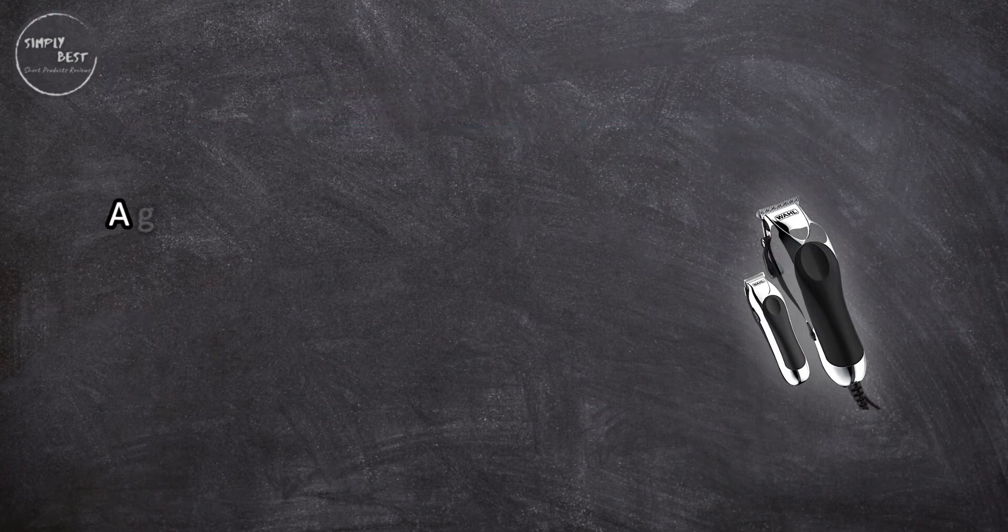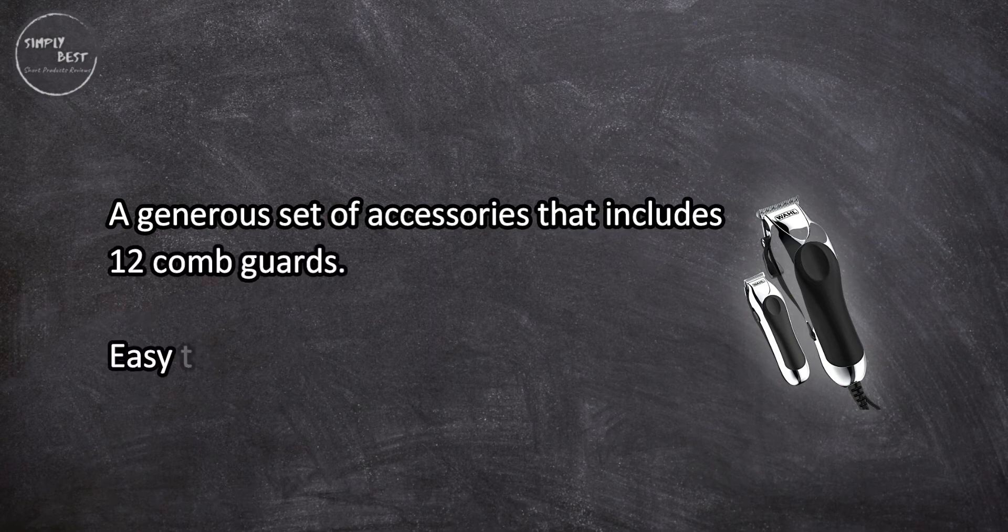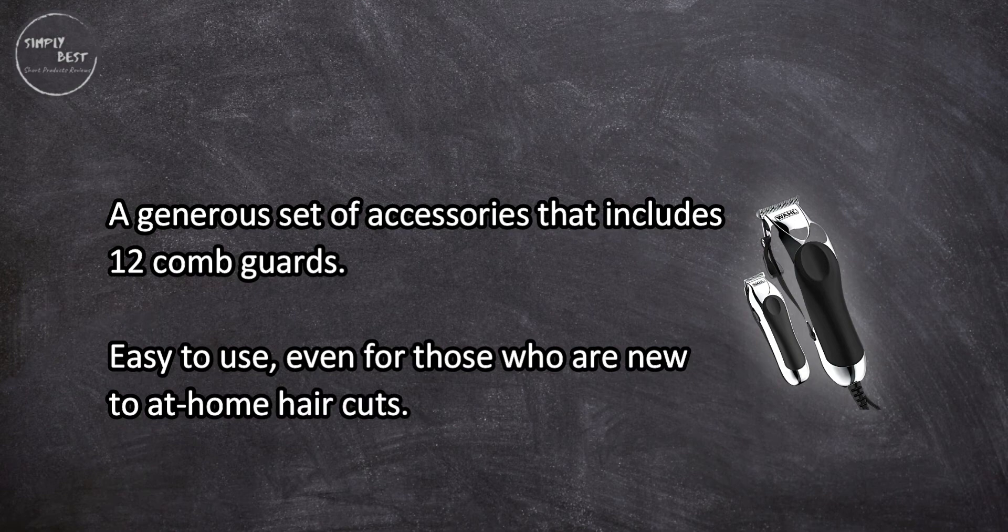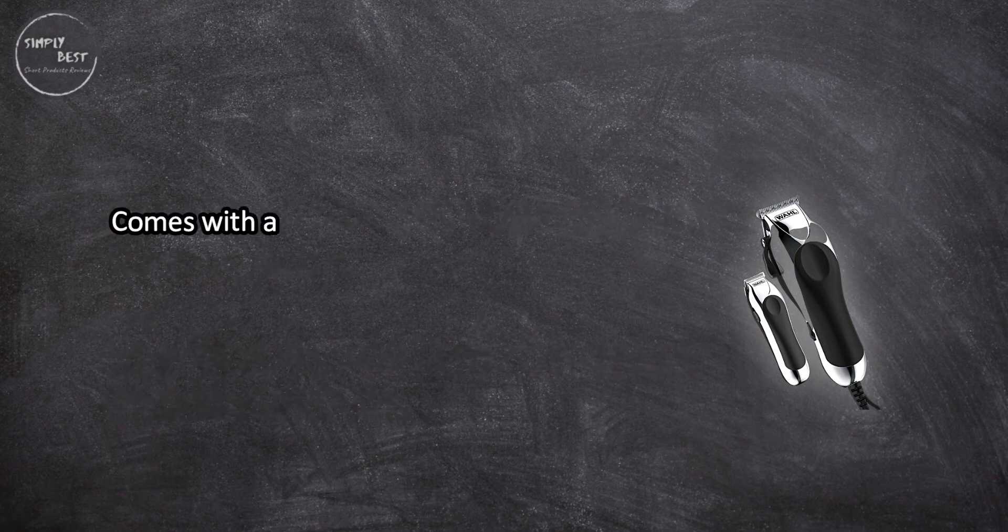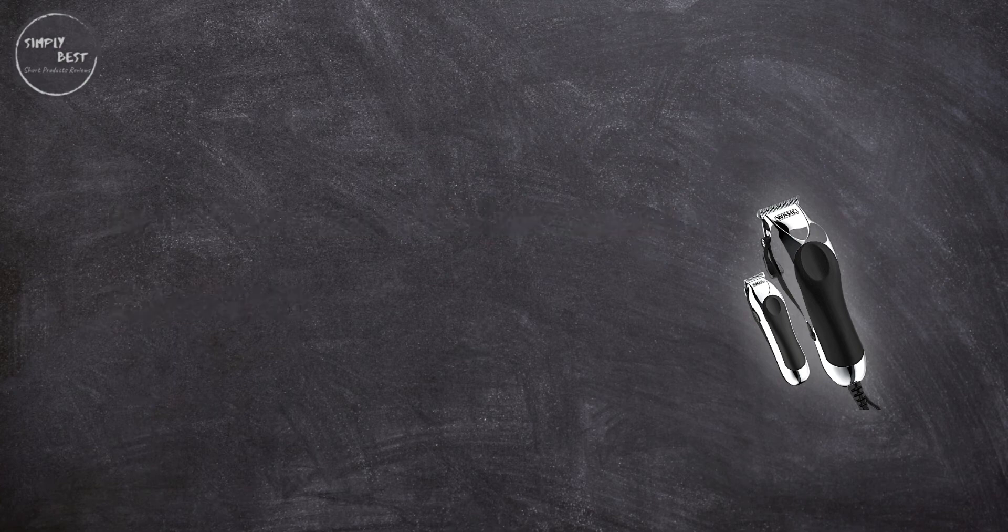At number three, Wahl Clipper Combo Pro. A generous set of accessories that includes 12 comb guards, easy to use even for those who are new to at-home haircuts. Comes with a generous collection of accessories, budget-friendly. Trimmer isn't as durable as the clippers.